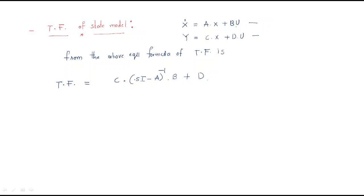The transfer function is always expressed in terms of s, so we multiply by sI, where I is the identity matrix. By subtracting A and then finding the inverse, we get a matrix. The inverse can be expanded as: adjugate of (sI - A) divided by determinant of (sI - A).